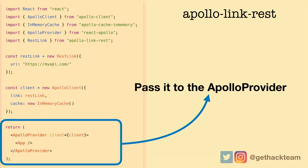Something you can actually do — and this is powerful — is have both a GraphQL server and REST endpoints in the same Apollo Client. If you have your own GraphQL server but some services don't have a GraphQL API, you can use REST endpoints alongside it in the same application, which makes it much easier to handle your data.